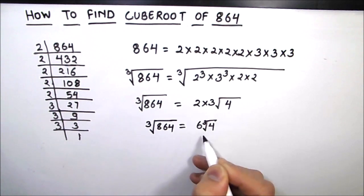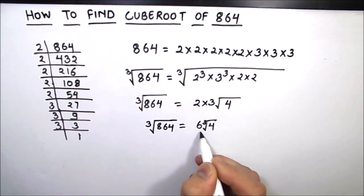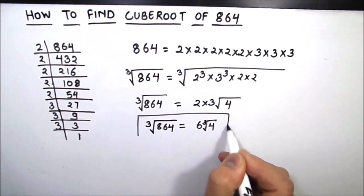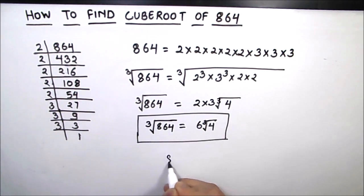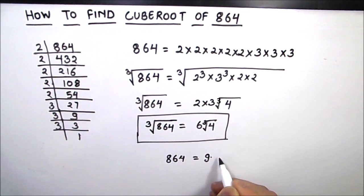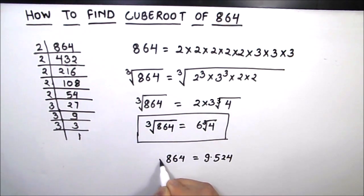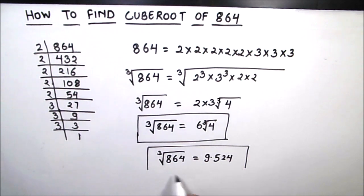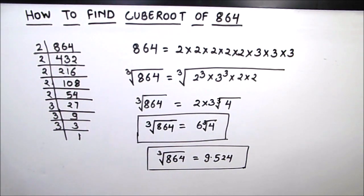So the cube root of 864 is 6 times the cube root of 4. If we convert it into decimal, it will be 9.524. So the cube root of 864 in decimals is 9.524.